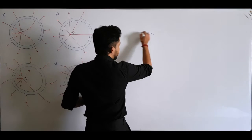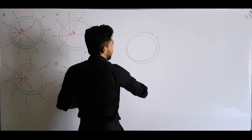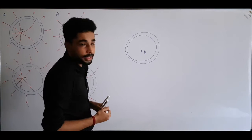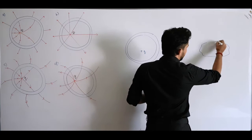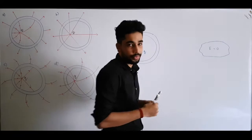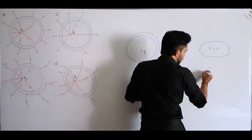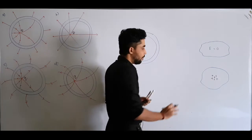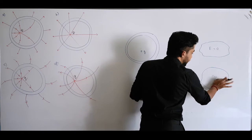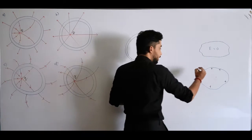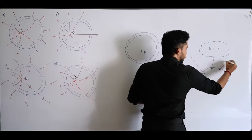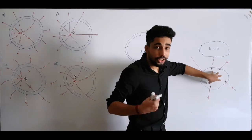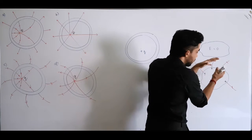Starting with a conducting shell — all conductors have the property that the electric field inside a conductor should be zero. If there are charges inside the conductor, they won't stay at that point; they are going to repel and get reflected onto the outer surface. So there is no electric field inside the conductor — whatever charges are induced have to come onto the surface, and the electric field should start from the surface of the conductor.